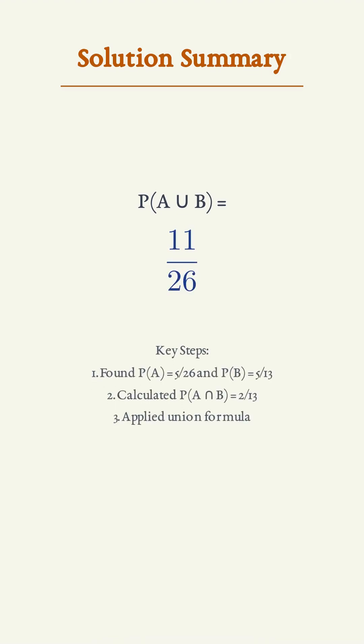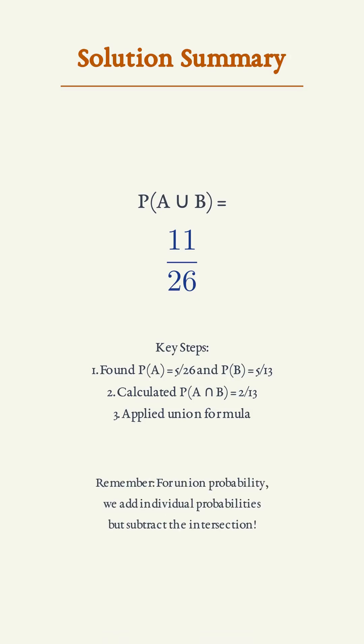Remember, for union probability, we add individual probabilities but subtract the intersection.